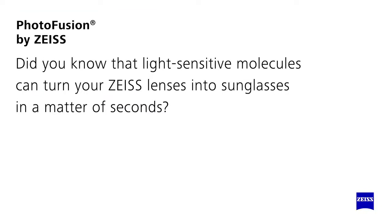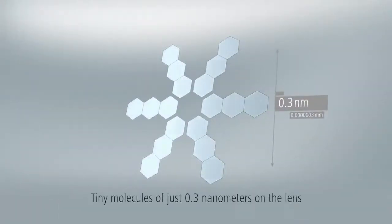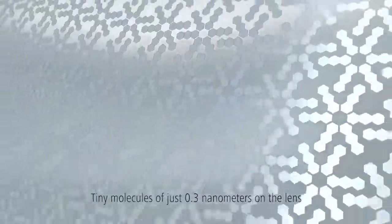Did you know that light-sensitive molecules can turn your Zeiss lenses into sunglasses in a matter of seconds? This is enabled by a layer of tiny photo-active molecules on the lens.